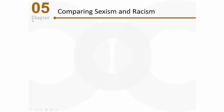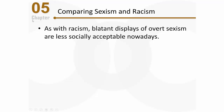Let's start by comparing sexism with what we've learned about racism. As with racism, blatant displays of overt sexism are less socially acceptable nowadays — society simply won't tolerate it. So researchers now need to look more closely at things like modern sexism, kind of like modern racism, and implicit sexism, just like implicit stereotyping and implicit racism. There are even IATs — that implicit association test we talked about previously — specifically geared toward measuring sexism.